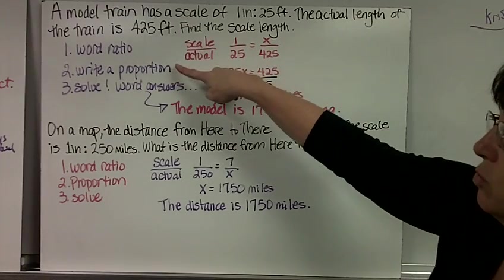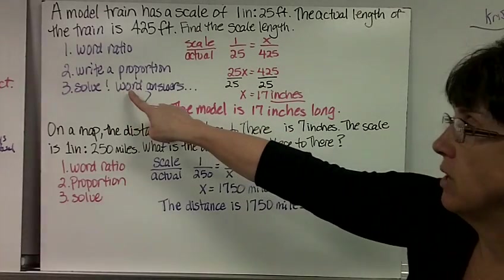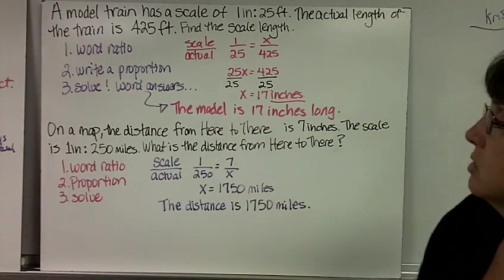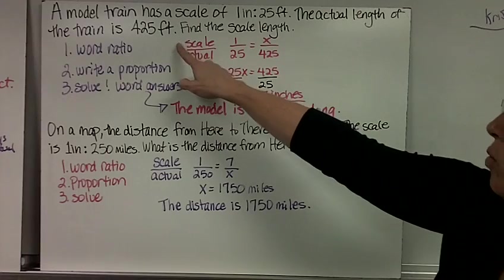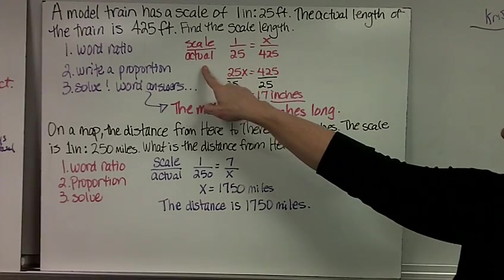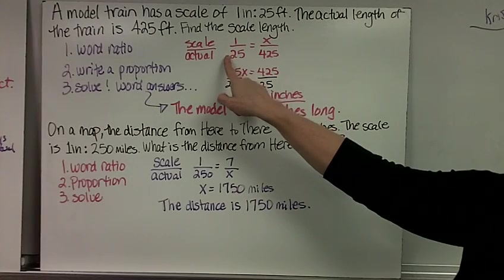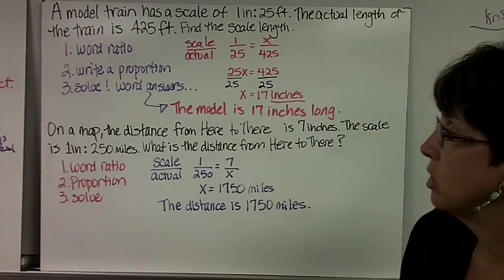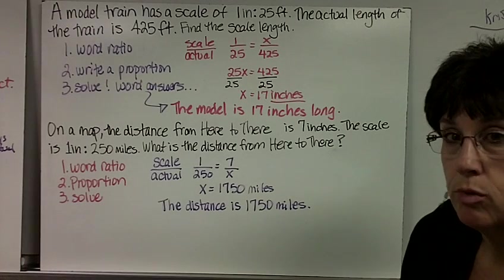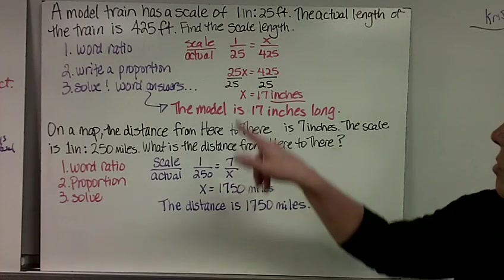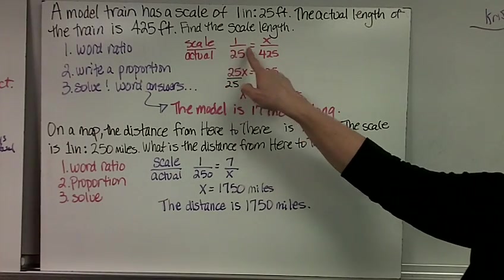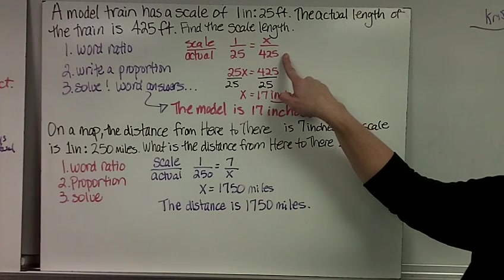Write the word ratio, write a proportion, and solve. Since it's a word problem, you need word answers. It's always scale over actual. It says 1 inch to 25 feet, so I'm just going to write 1 to 25. Usually when we're doing our problems, we don't put the words until the answer. So 1 over 25 equals x over 425.